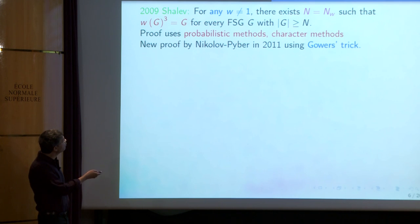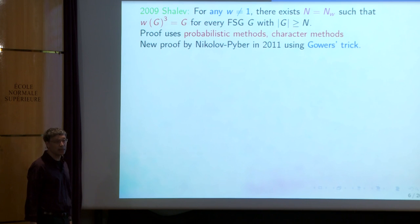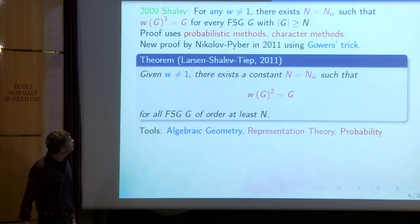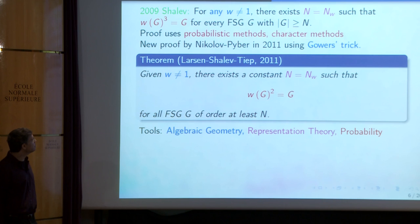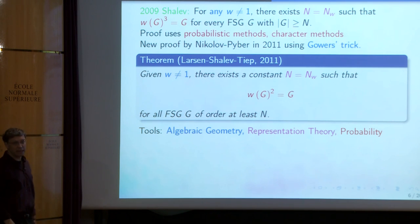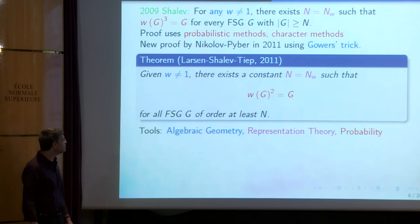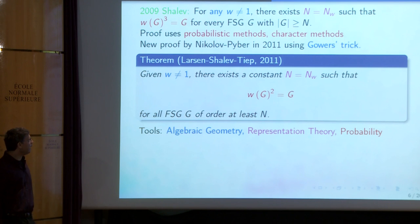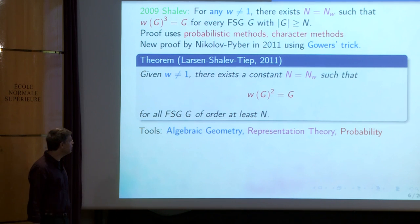If the finite simple group is large enough and the word is given, then every element is a product of three word values. The proof used the probabilistic method, character method, and also the theorem of Borel — the dominance of word maps. There was a new proof by Nikolov and Pyber a bit later using Gowers' trick and quasi-random groups.